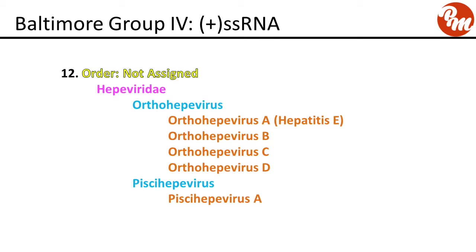The next group, order not assigned, family Hepeviridae, genus orthohepevirus. Orthohepevirus A is also known as hepatitis E virus. There is also orthohepevirus B, C, and D, and pichihepevirus includes pichihepevirus A.